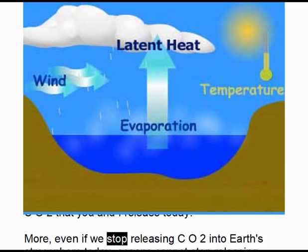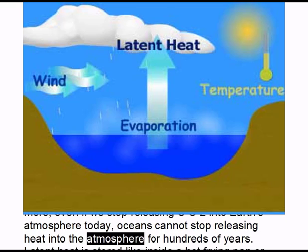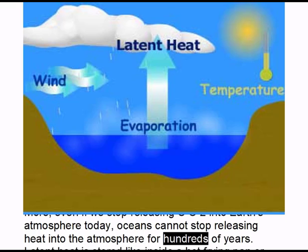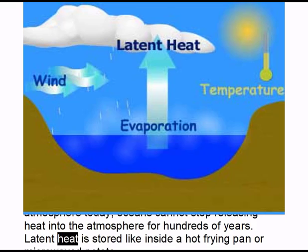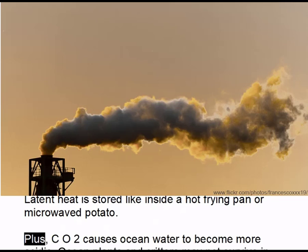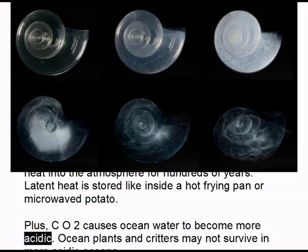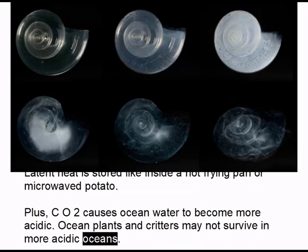Even if we stop releasing CO2 into Earth's atmosphere today, oceans cannot stop releasing heat into the atmosphere for hundreds of years. Latent heat is stored like inside a hot frying pan or microwaved potato. Plus, CO2 causes ocean water to become more acidic, and ocean plants and critters may not survive in more acidic oceans.